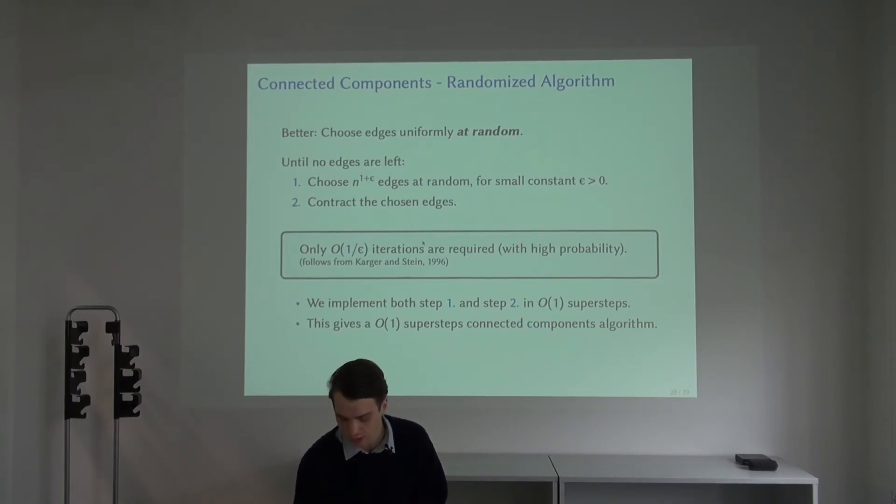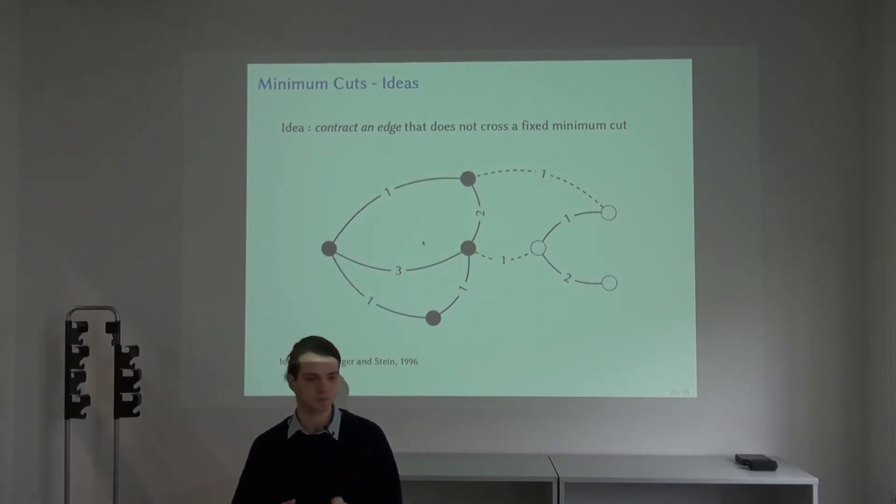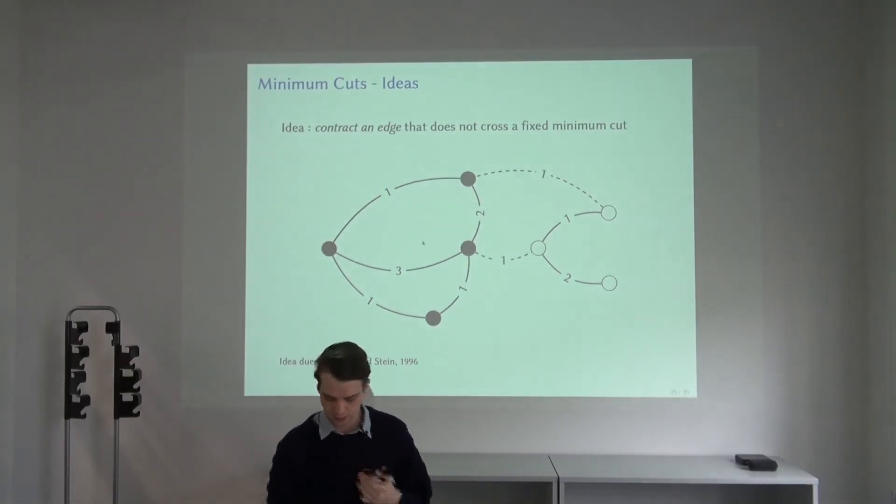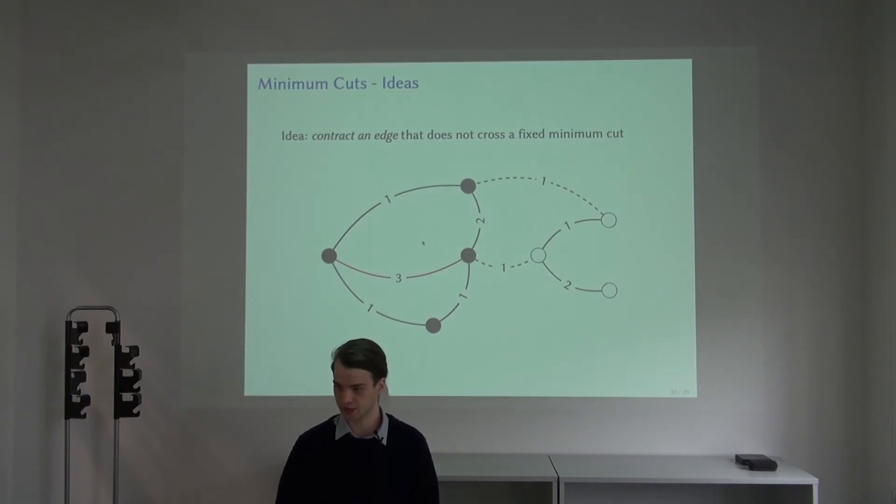Now we go over to the minimum cut ideas. A similar idea of contracting edges has also previously been fruitful and we build on those ideas. What if we contract an edge, so we merge the endpoints of the edge, of an edge that does not go across these partitions, the partition that forms the minimum cut. Then the edges that form the minimum cut are unaffected, and we can just repeat this until only the edges of the minimum cut are left.